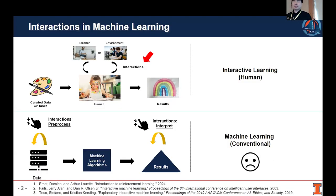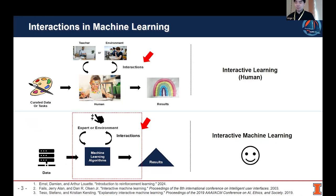First, let's consider the learning scenario of a human. To learn skills, human users start with very limited data. Then by interacting with the teacher or environment, humans can incrementally improve their skills and knowledge based on the feedbacks. In the end, they could have very good outcomes. However, in the conventional machine learning regime, the interactions are mainly involved in the beginning and/or ending phase — for example, to pre-process the data or interpret the results. This is not consistent with human learning.